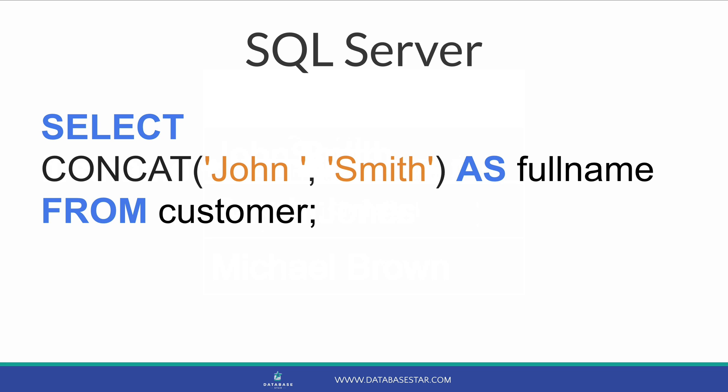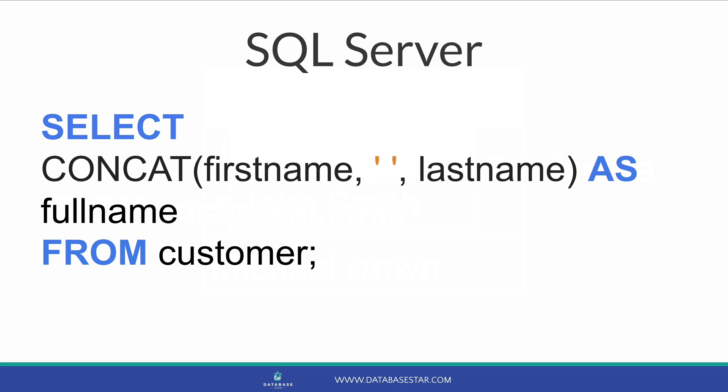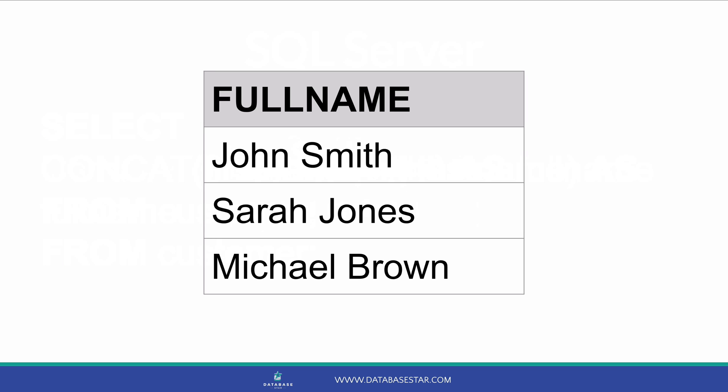The other way to concatenate values in SQL Server is to use the CONCAT function. This works similarly to Oracle — you call the function and place string values inside it. To concatenate the first name and last name, add them into the function. The good news is that in SQL Server, you can use three or more values in the CONCAT function — up to 254. Simply add each value you want to concatenate inside the function, separated by a comma. In this example, we concatenate a first name, a space, and a last name, and we can see the names separated by a space in a single column.